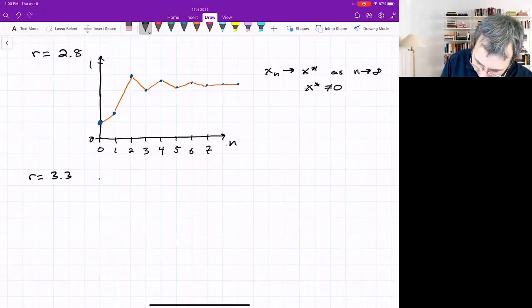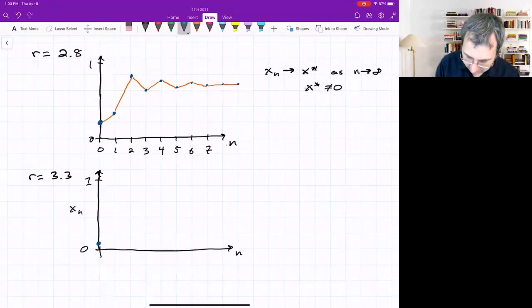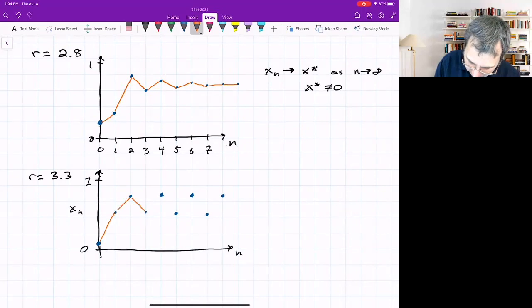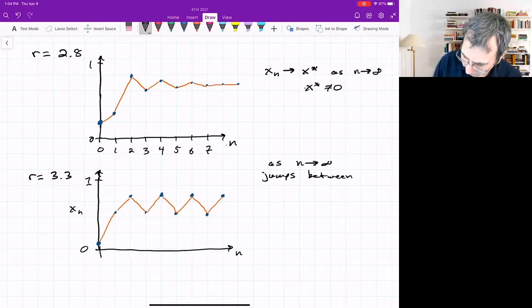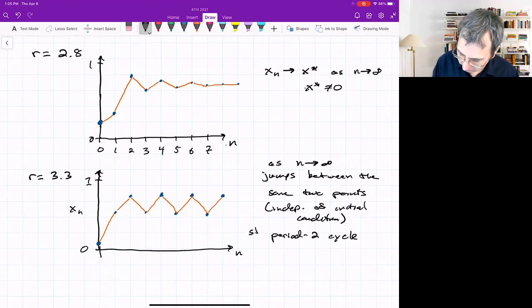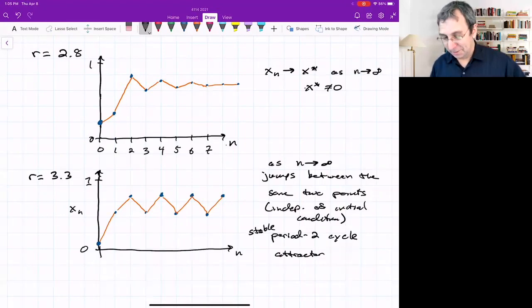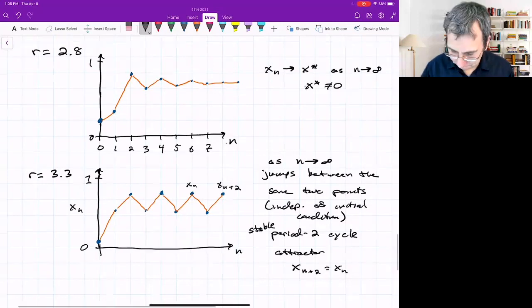What about r equals 3.3? Start with some initial condition. This will go up and eventually settle down on a cycle. It's going between two points over and over again. This is like the discrete map version of a limit cycle. It jumps between the same two points as n goes to infinity, independent of the initial condition. We call this a period-2 orbit or period-2 cycle, and it's stable. It's the attractor.